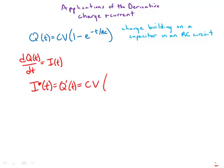Now, the derivative of 1, of course, is 0. And then we have the negative sign. Then we have the derivative of the exponent. So that's -1/RC times e^(-t/RC).